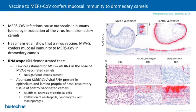Moving on to the MERS family, a paper from Haagmans et al. shows the use of RNA Scope in-situ hybridization for detection of the MERS virus. MERS-CoV infection causes outbreaks in humans through introduction from dromedary camels. The researchers showed that the viral vaccine MVA-S confers mucosal immunity to MERS-CoV in dromedary camels. The RNA Scope ISH assay demonstrated fewer cells staining for MERS-CoV RNA in the nose of MVA-S vaccinated camels, with no significant lesions compared to controls. Abundant MERS-CoV RNA was present in the epithelium and lamina propria of nasal respiratory tissue of control-vaccinated camels, with a comparison also made between IHC and ISH detection.